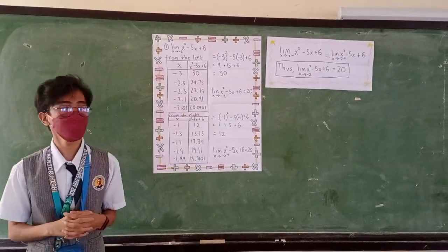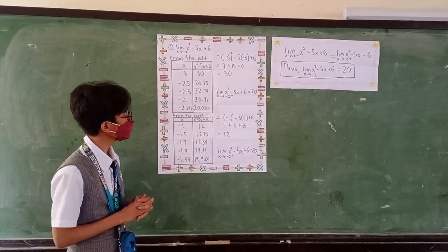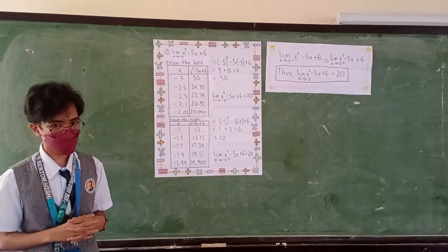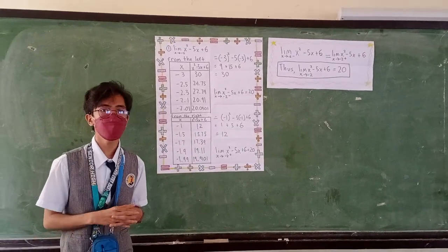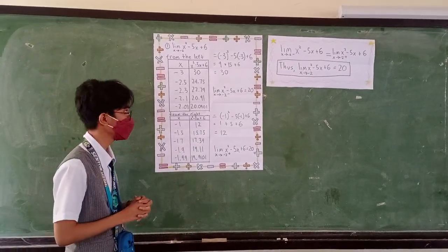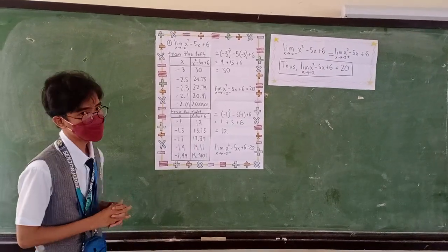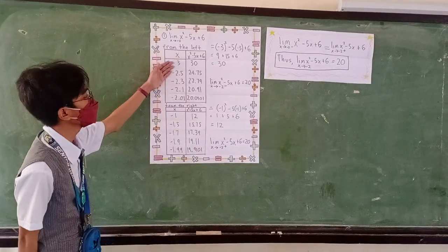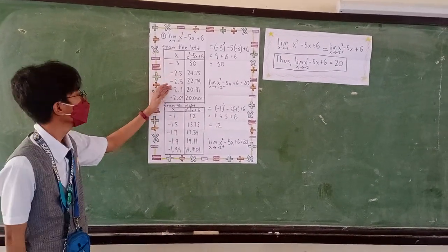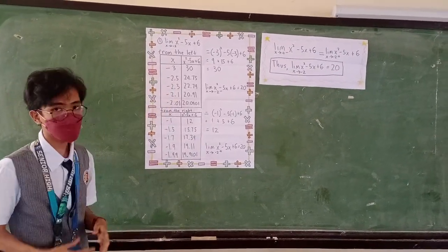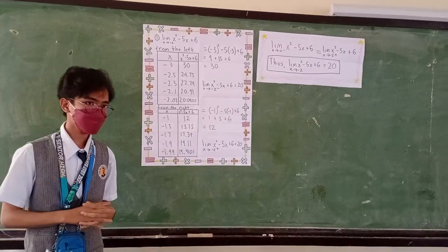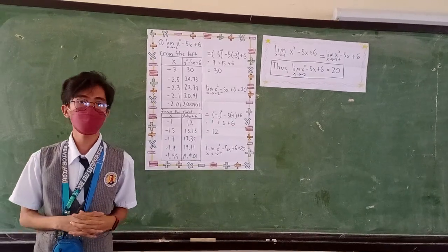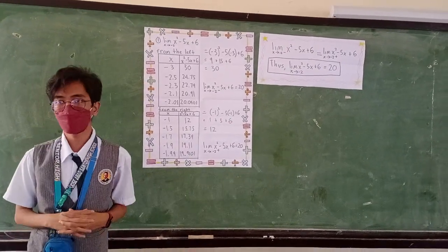We have the function x squared minus 5x plus 6 as x approaches negative 2. We need to use the values of x as it approaches negative 2 from the left side and the right side. We look for their function values from the left side. These are my chosen values: negative 3, negative 2.5, negative 2.3, negative 2.15, negative 2.01, negative 2.11.